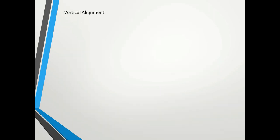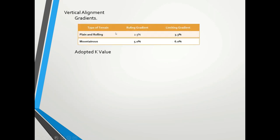Now vertical alignment. The most important thing in vertical alignment is gradient. A higher gradient means more power is required from the vehicle, and the vehicle cannot achieve the desired design speed. From the code, for 100 km/h design speed the ruling gradient is 2.5%, the limiting gradient is 3.3%, for mountainous terrain it is 5% and 6%.